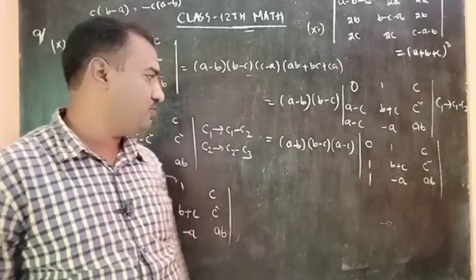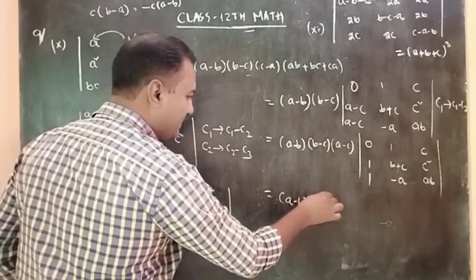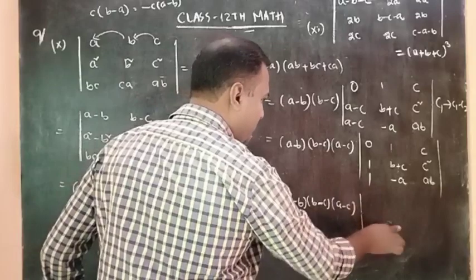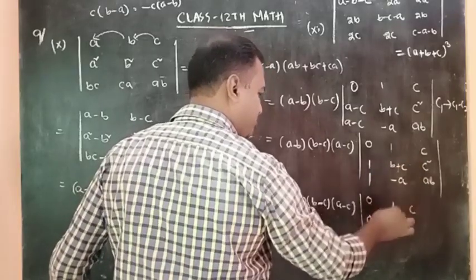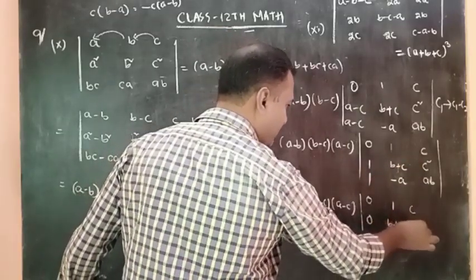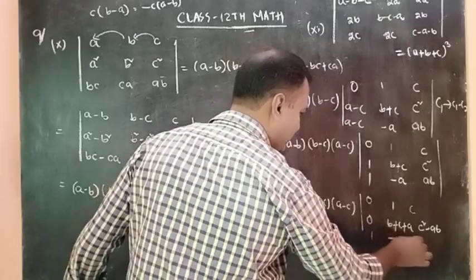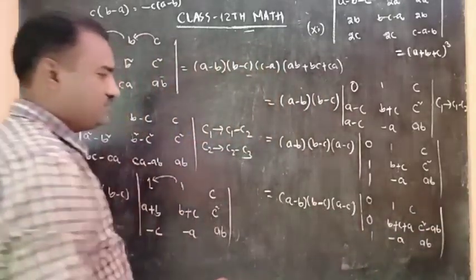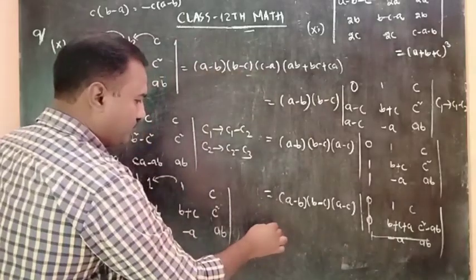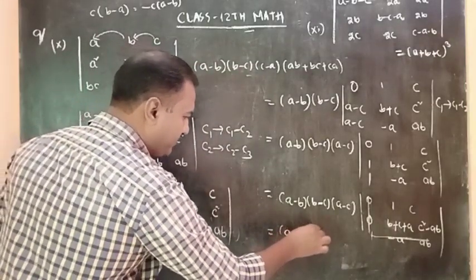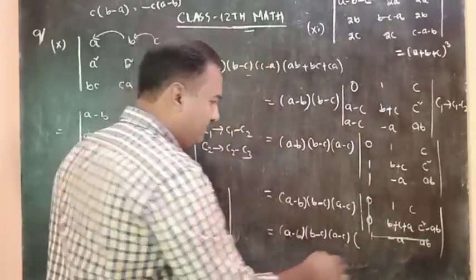We get 1, 1, 0; then A minus B, B minus C, A minus C; row 1 gives 0. Then 0, 1, C; zeros. Then B plus C plus A; C squared minus A, AB; and 1 minus A, AB.